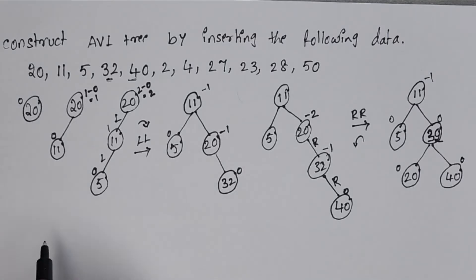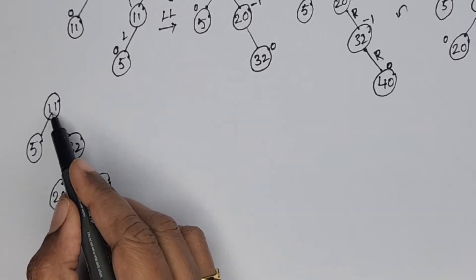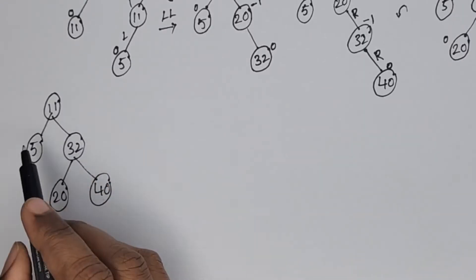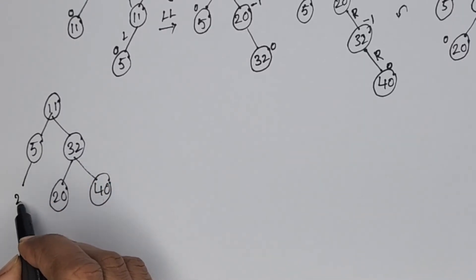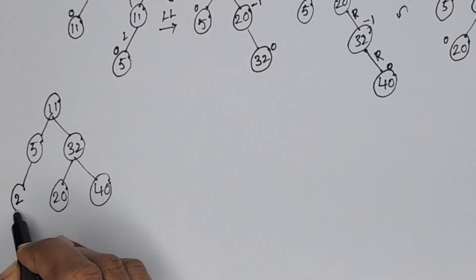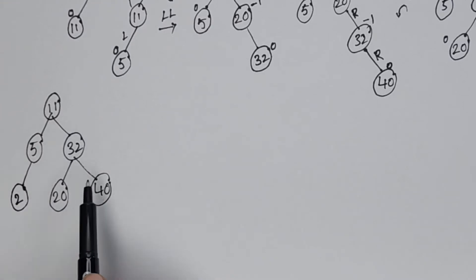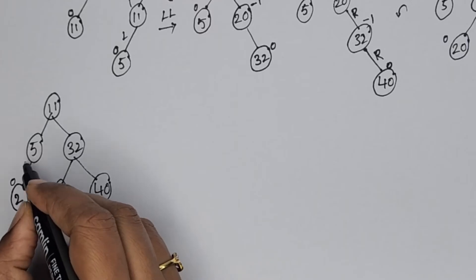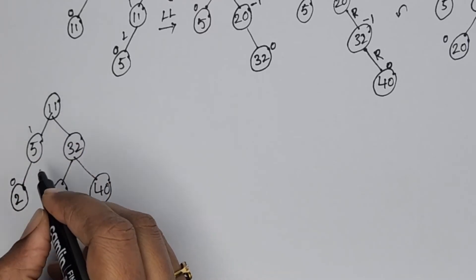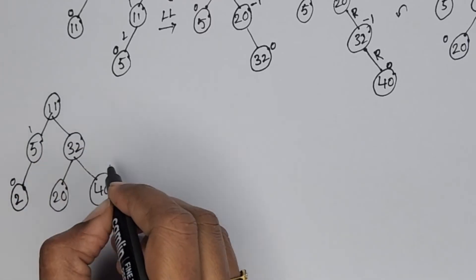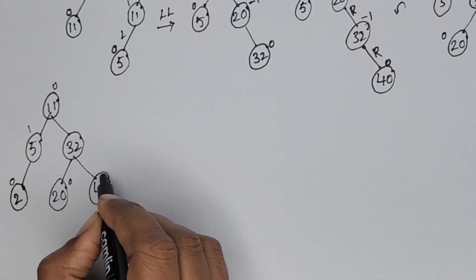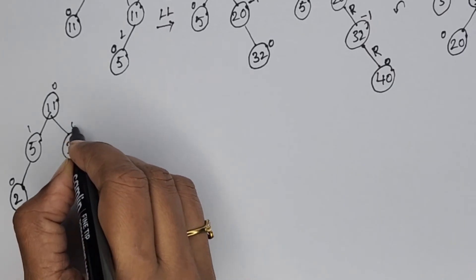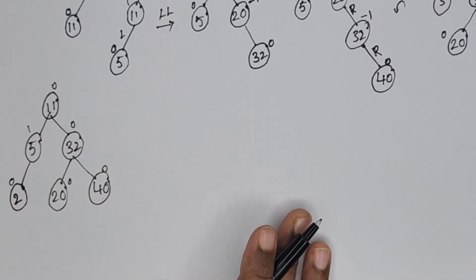Next, I am going to insert one more element: 2. Since 2 is less than 11 and less than 5, it goes to the left of 5. We write the balance factors again: the values come out to 0, 1, 0, 0, 0, and the tree remains balanced.